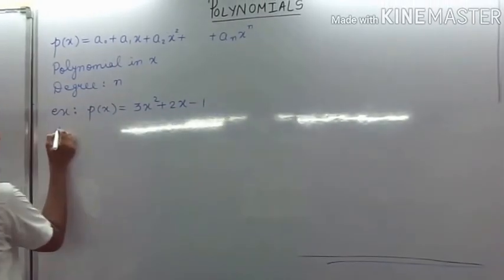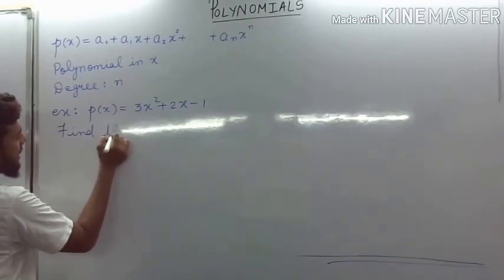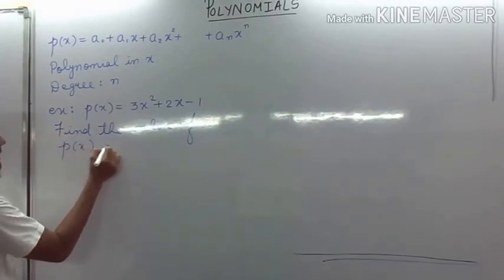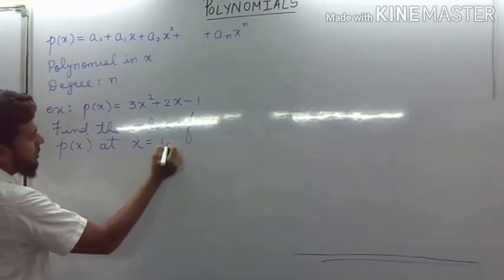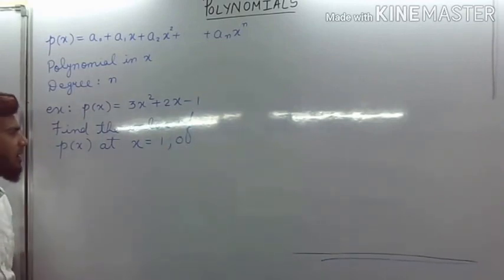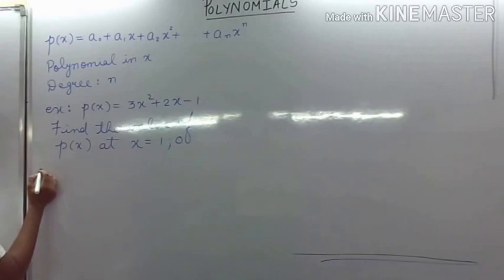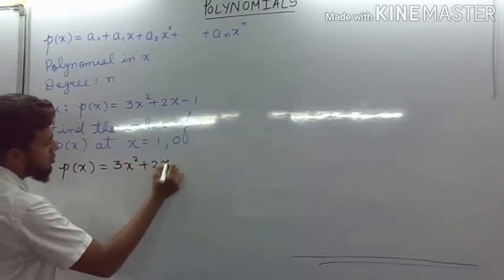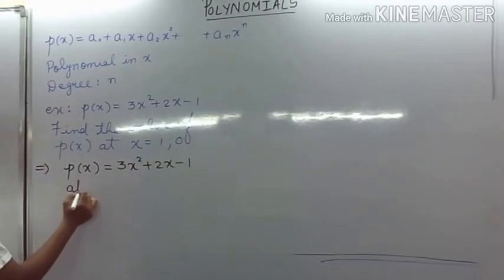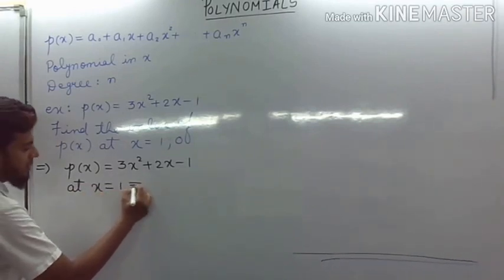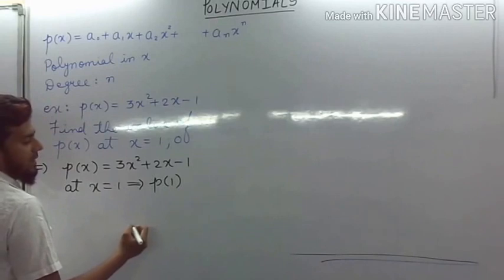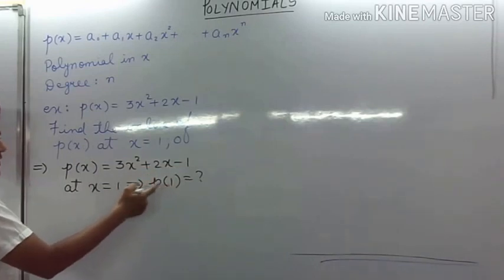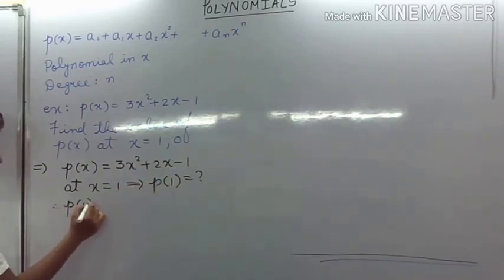Now we need to find the value of the given polynomial at x = 1, at x = 0, and so on. We can find the value of the polynomial for any value of x. We start by writing the given polynomial p(x) = 3x squared plus 2x minus 1, and at x = 1 we need to find the value of p(1). Since x = 1, wherever we have x we will replace it with 1.